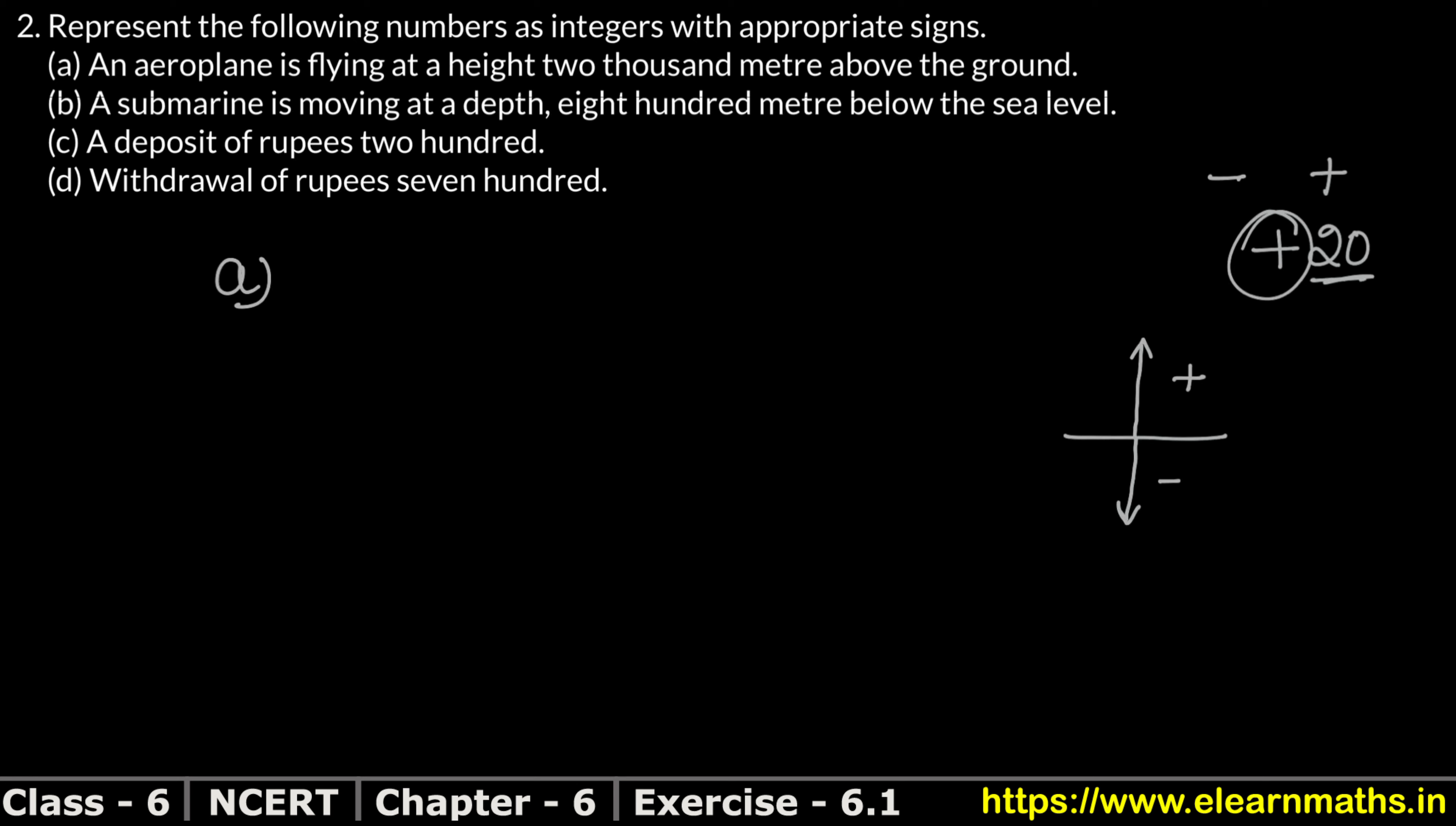So let's mark it here. It says above the ground, that means our value will be plus. But plus what? Because the figure is 2000 meters. So plus 2000 meters for part A.